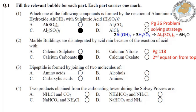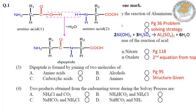Question number 3: Dipeptide is formed by joining of two molecules of — page 95 کی اوپر structure given ہے۔ دو amino acids مل کے dipeptide بناتے ہیں — answer is A۔